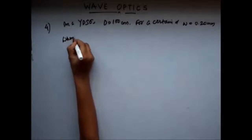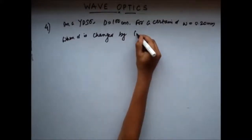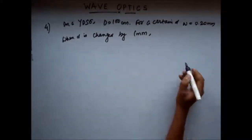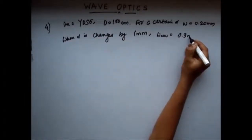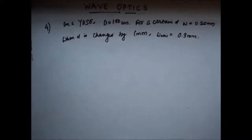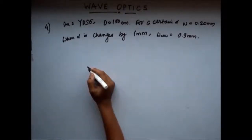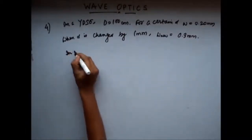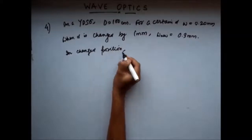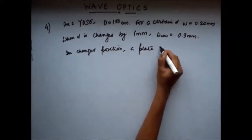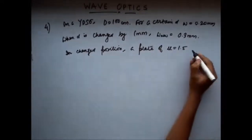When d is changed by 1 millimeter, the fringe width becomes 0.3 mm. Now, in this changed position, that is when the d is changed by 1 millimeter, a plate of mu 1.5 is kept in front of one of the slits.